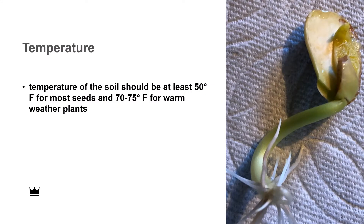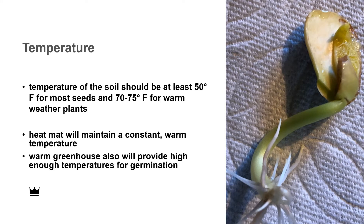Temperature is also important. For most plants, the temperature of the soil should be at least 50 degrees Fahrenheit, and 70 to 75 degrees Fahrenheit for warm-weather plants. A sunny windowsill might be warm enough, but a heat mat is a better source of heat that will maintain a constant warm temperature. A warm greenhouse also will provide high enough temperatures for germination.